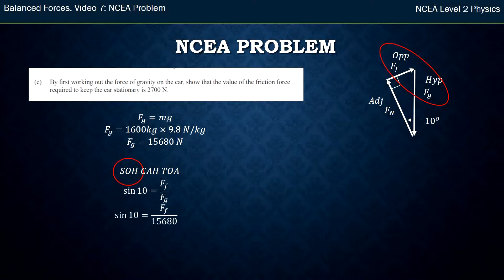Throw my values in there. So I've got gravity force, which is 15,680. And then rearrange it to find my friction force. And that gives me 2,722. And to two significant figures, that's 2,700. So another merit question there.